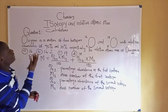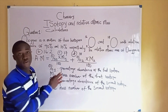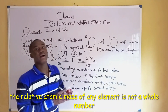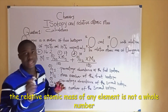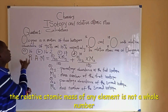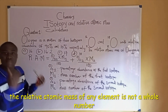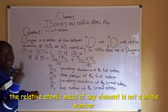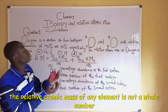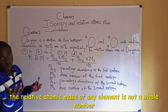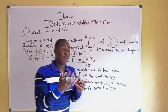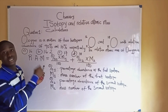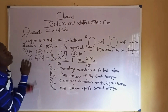We can solve this particular question without even using this formula, because the relative atomic mass of any element is not a whole number. So a smart student will just check the option that is not a whole number. You can see option B here is not a whole number, so basically the relative atomic mass of oxygen is 16.2 — but we shall solve to confirm.